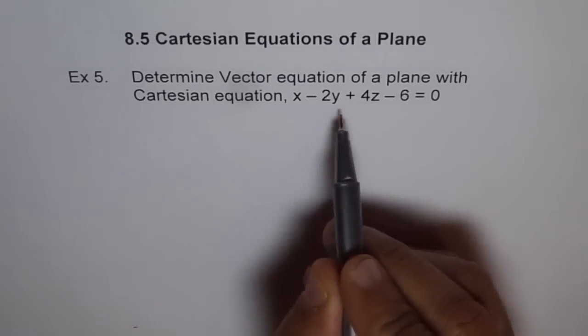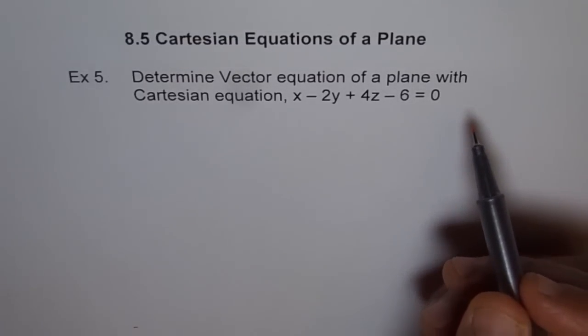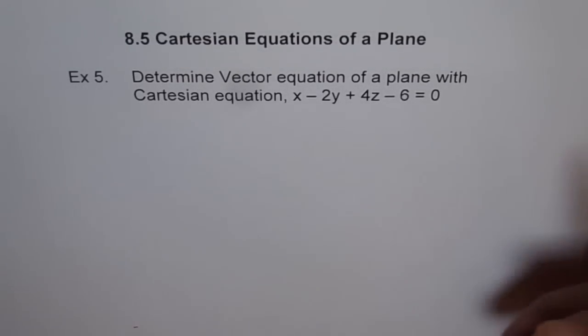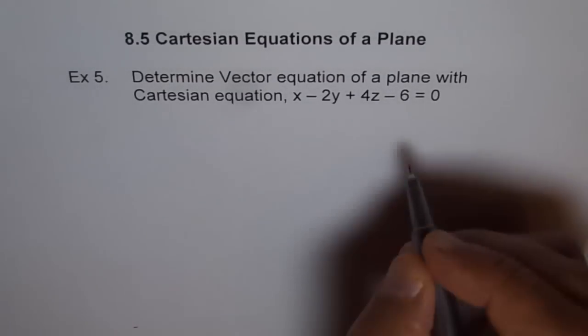What we will do is, we are given this Cartesian equation. We will find three points from this equation, three points on the plane. Once we have three points, we can find two direction vectors and the third point and we get our vector equation.